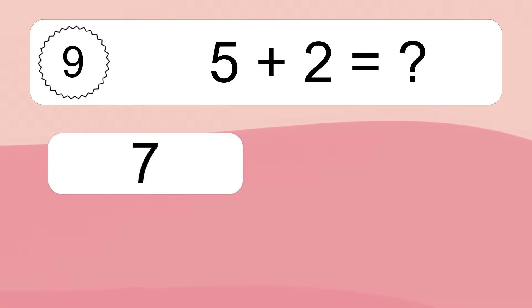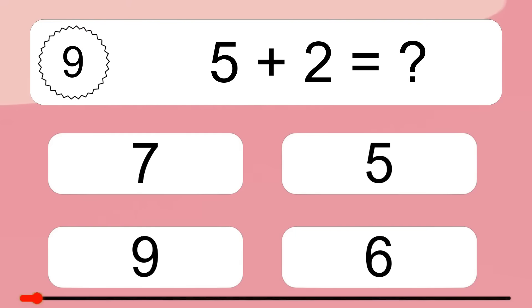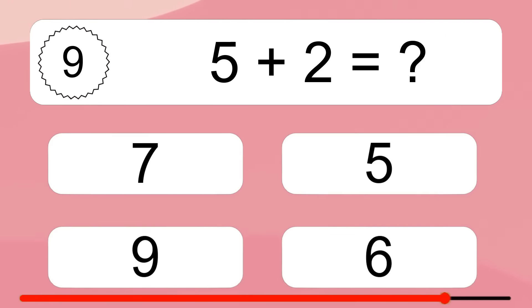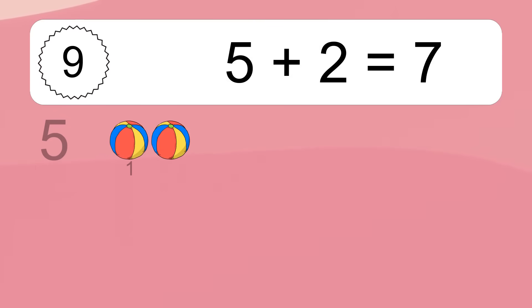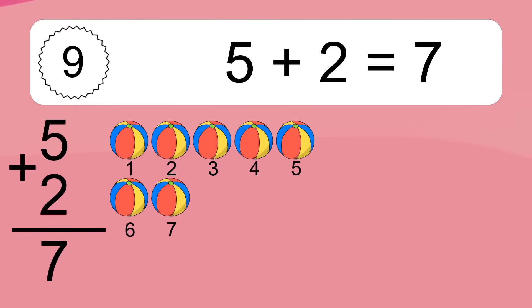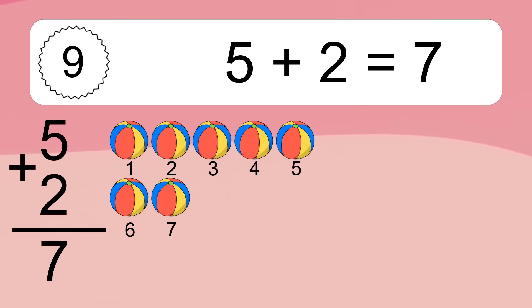5 plus 2 equals what? 5 plus 2 equals 7. Let's count it. 1, 2, 3, 4, 5, 6, 7.